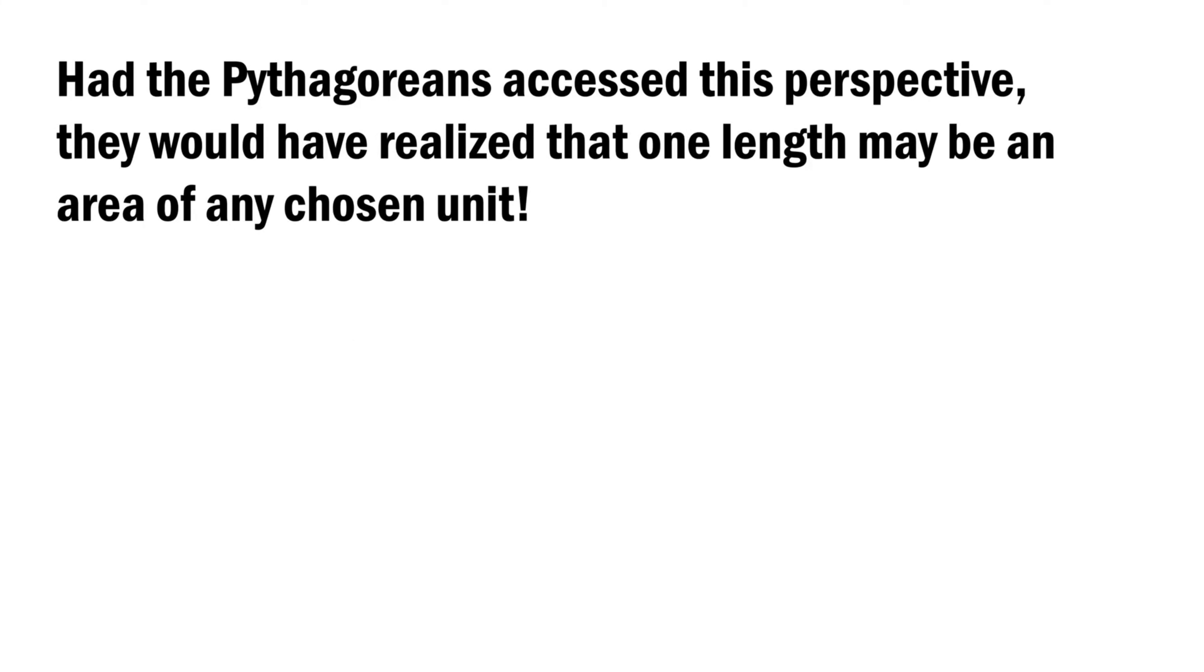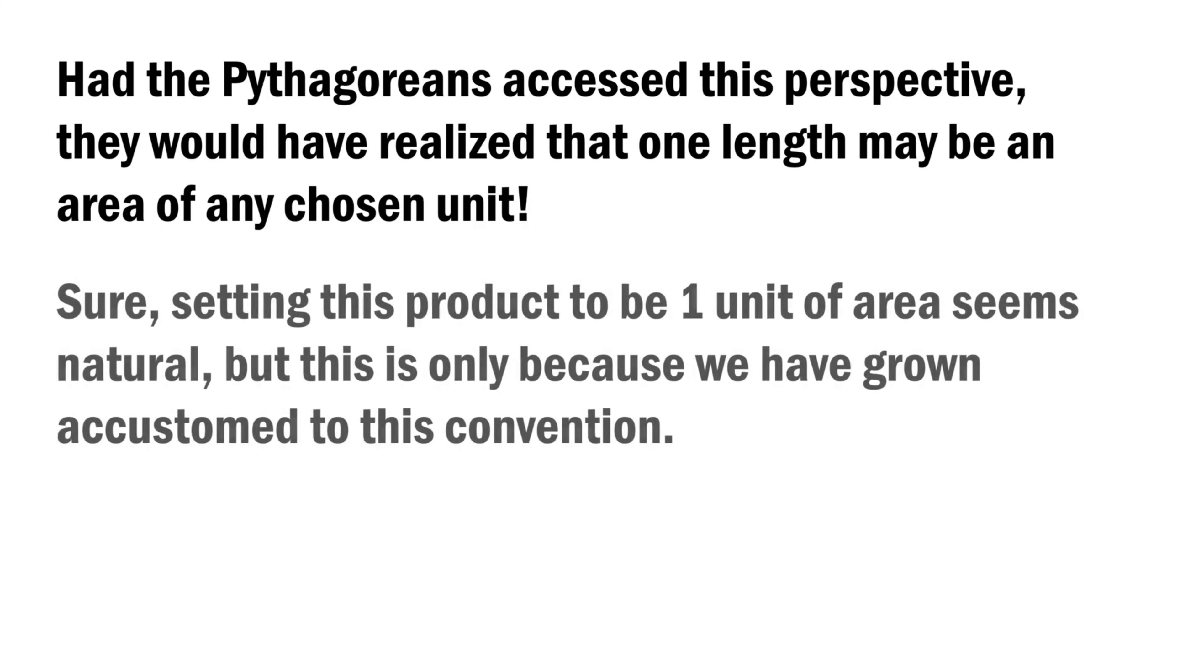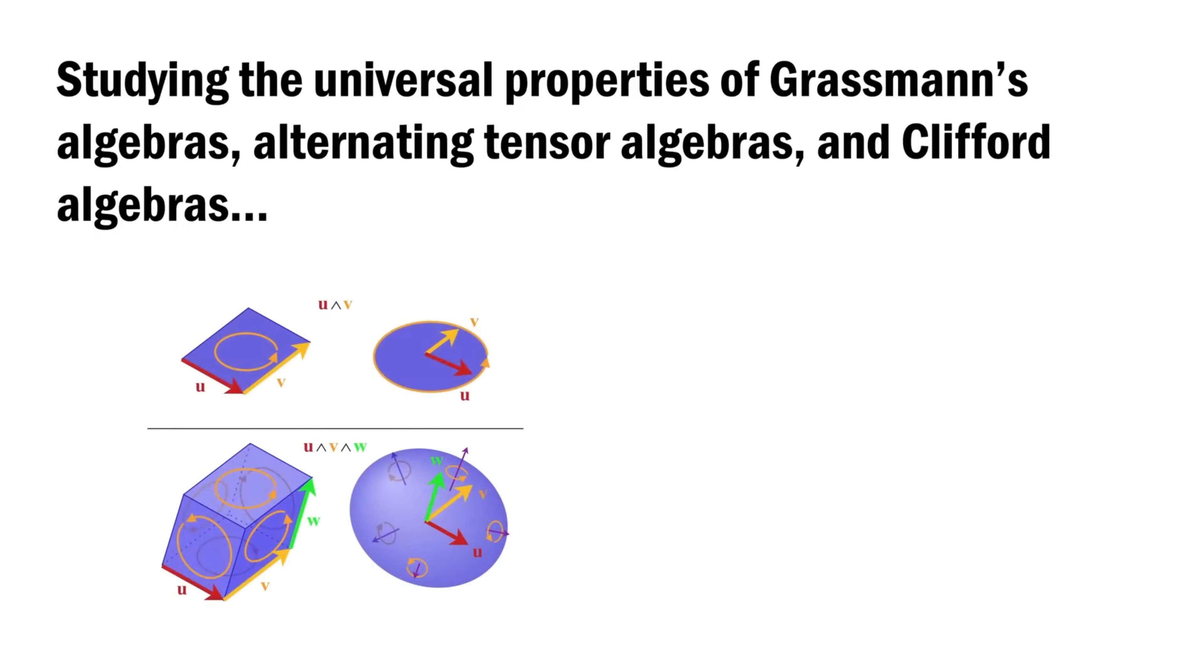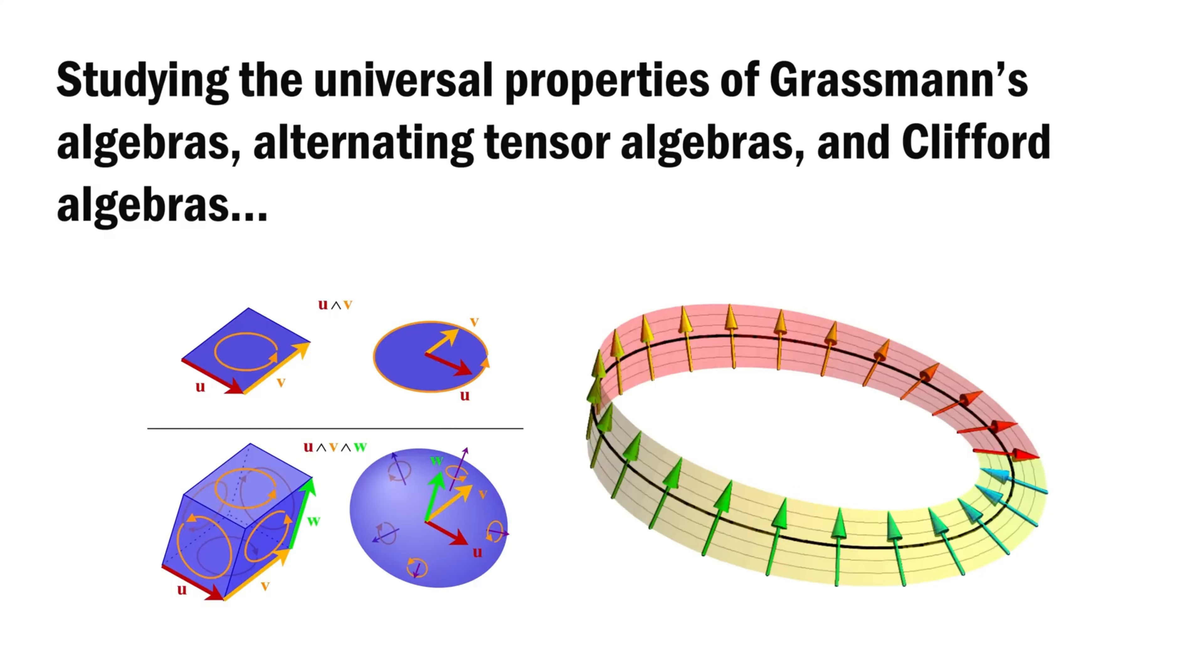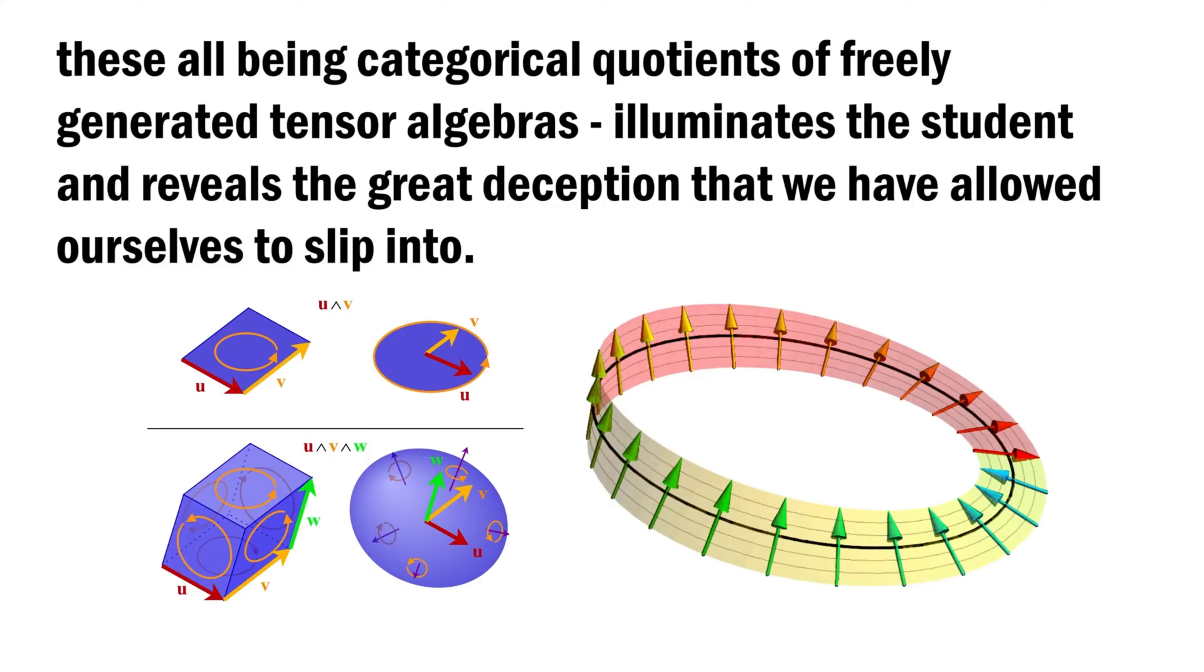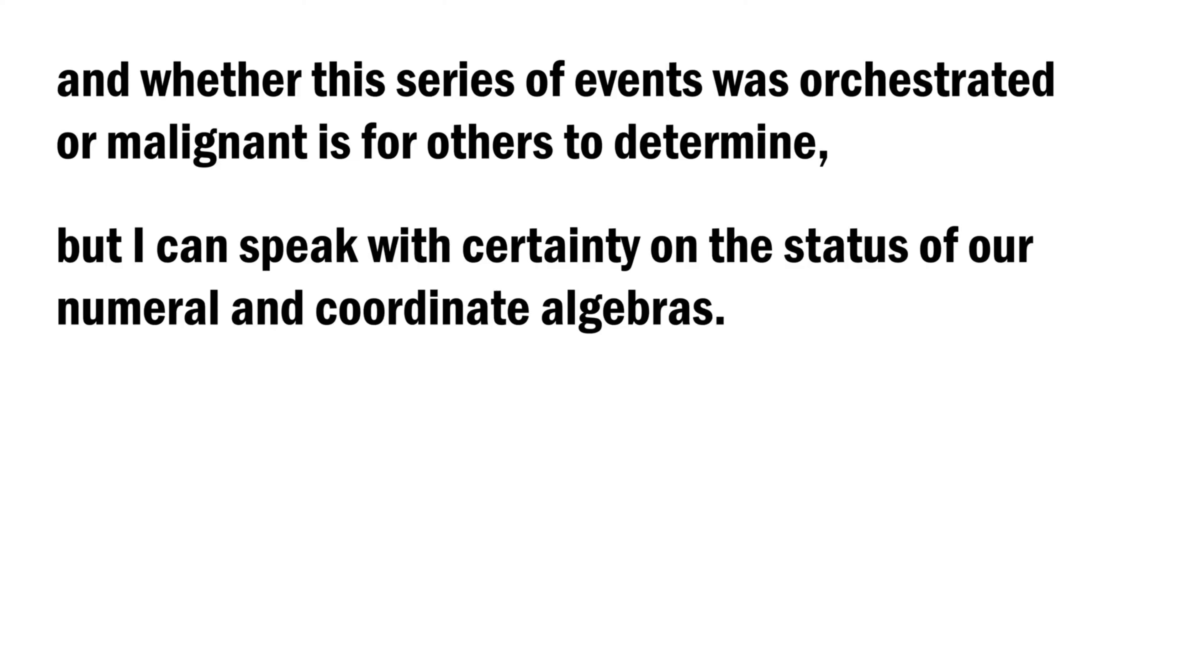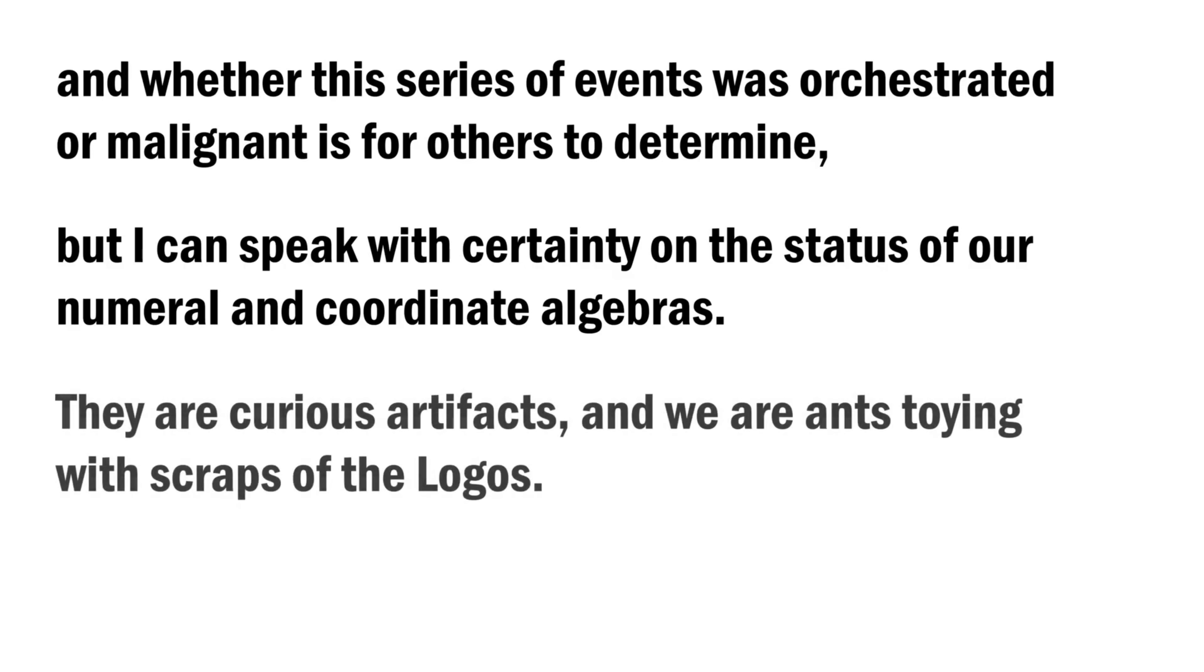Had the Pythagoreans accessed this perspective, they would have realized that one length times one length may be an area of any chosen unit. Sure, setting this product to be one unit of area seems natural, but this is only because we have grown accustomed to this convention. Studying the universal properties of Grassmann's algebras, alternating tensor algebras, and Clifford algebras - these all being categorical quotients of freely generated tensor algebras - illuminates the student and reveals the great deception that we have allowed ourselves to slip into. And whether this series of events was orchestrated or malignant is for others to determine. But I can speak with certainty on the status of our numeral and coordinate algebras. They are curious artifacts, and we are ants toying with scraps of the logos.